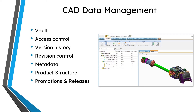For example, you have something you're working on and you say this is good — you did a design review, everyone likes it, and you're ready to start building a prototype or go to manufacturing. You can use different processes like promotions and releases to move it up in maturity in its lifecycle. You also have notifications — for example, if you checked in a model and want to receive an automatic email notification if someone else checks it out, checks it in, or modifies the metadata, you can use subscriptions to receive those automatic email notifications about changes to objects within Windchill.